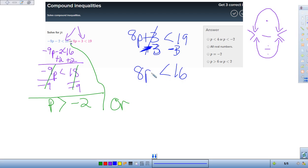And I get 8P is less than 16. If I divide by 8, uh-oh, do I have to follow my rule? Do I have to follow? 16 divided by 8 is 2. Well, did I multiply or divide a negative number? No, this was a positive 8. So do I need to flip my sign?